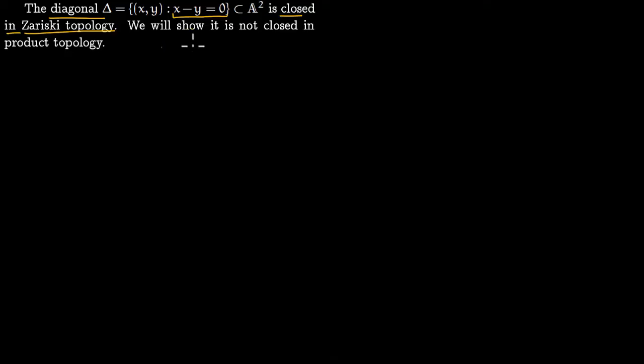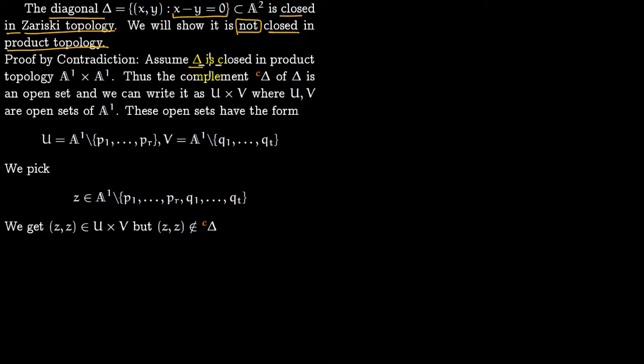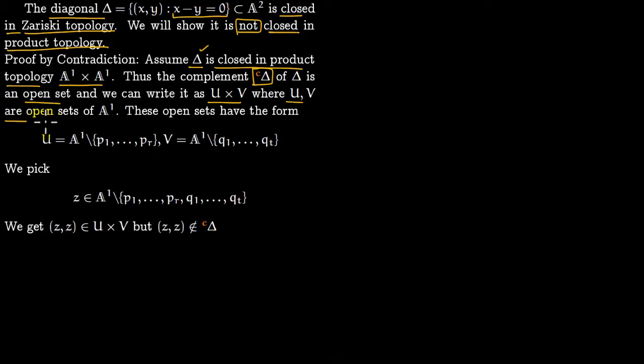What we are going to show now is that the diagonal is not closed in the product topology. The proof is by contradiction. Assume the diagonal is closed within the product topology — the product topology on A1 times A1, because the diagonal lives in the space A2. The complement of the diagonal is then an open set, and we can write it as U times V where U and V are open sets of A1. The contradiction we will arrive at is finding a point (z, z) in U times V, but (z, z) obviously lies within the diagonal.